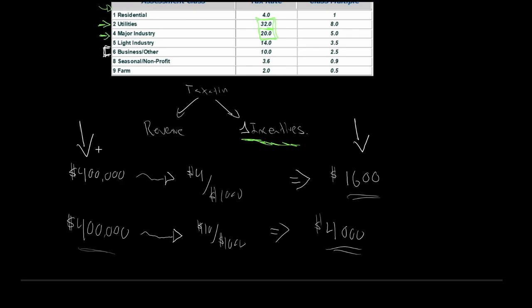Ultimately, council will set the tax rates for each class in order to achieve its political or economic objectives. As stated, taxation serves two roles: revenue objectives, or to change the levels of incentives.